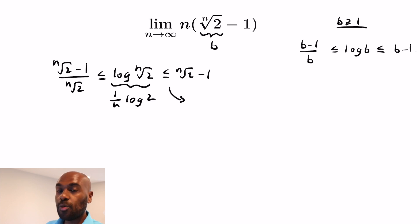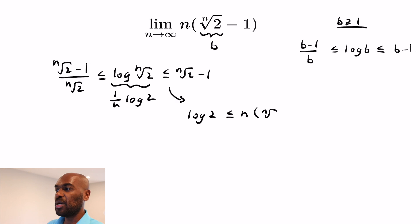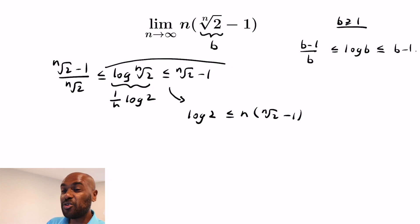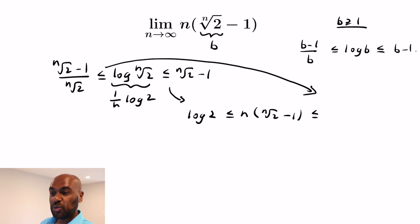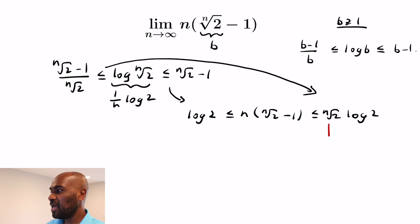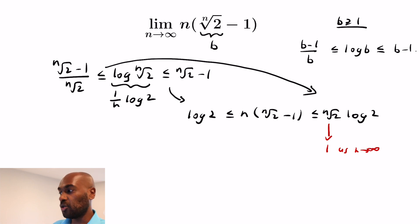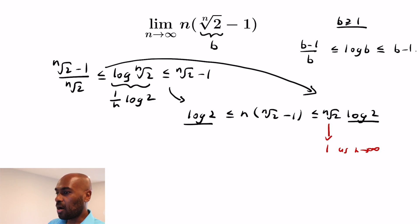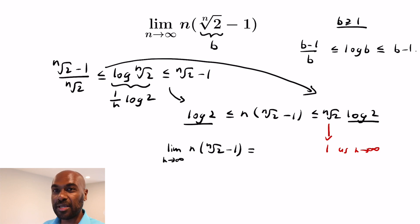When we multiply by n, we get inequalities involving our expression. Using the latter inequality, log 2 is less than or equal to n·(nth root of 2 - 1). Using the first inequality and multiplying through, our quantity is less than or equal to (nth root of 2)·log 2. As n goes to infinity, the nth root of 2 goes to 1, since 2^x is continuous and x → 0. So our sequence is squeezed between two things that both go to log 2, and our limit is log 2.